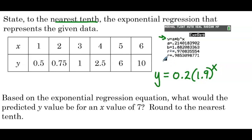One thing to point out: we still get an R-squared and an R value, but talking about correlation coefficient with an exponential regression is not something we do. So we ignore these two values when we're running an exponential regression.